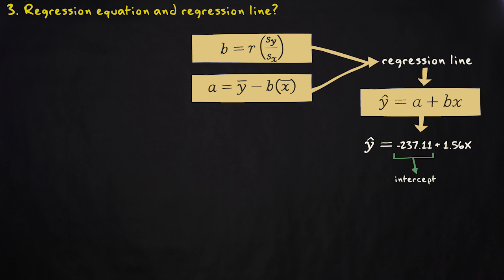The regression equation is y hat minus 237.11 plus 1.56 times x. The intercept indicates that the predicted y value is minus 237.11 when x is 0. This number has no substantive meaning because a physical height of 0 meter is impossible. The intercept only serves mathematical purposes. It makes it possible to draw the line.